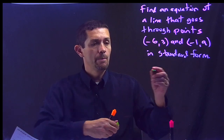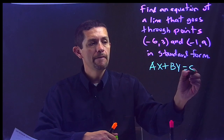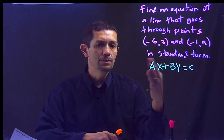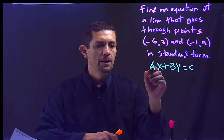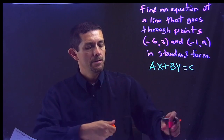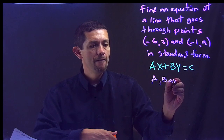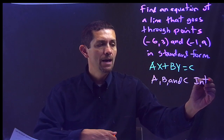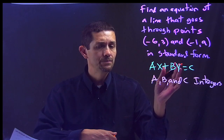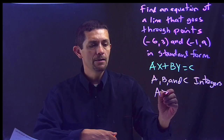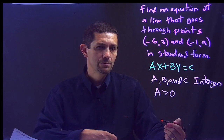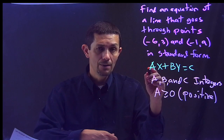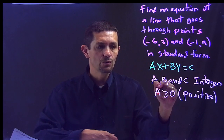Standard form is Ax plus By equals C. Meaning whatever equation I write, I need to have my x and y on the same side. There are a couple of rules: A, B, and C are integers — meaning whole numbers, positive or negative. So they have to be integers; no fractions, no decimals, just whole numbers. One more requirement: A has to be greater than zero, which means A has to be positive. If there's any value in front of the x, that value has to be positive. So those are the rules to write standard form.